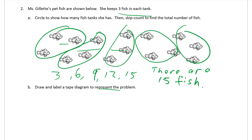Draw and label a tape diagram to represent this problem. So we've got a piece of tape. We know there are 15 fish. And we figured out that there were 5 tanks: 1, 2, 3, 4, 5.